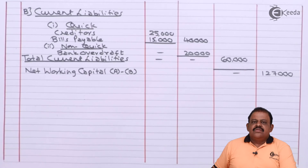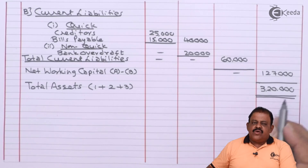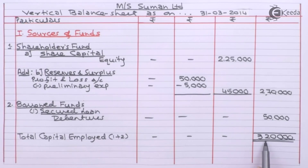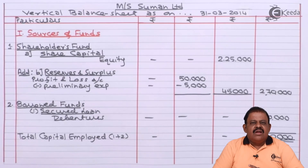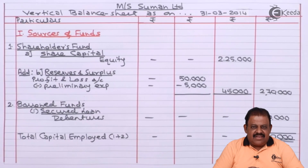From total current assets we deduct total current liabilities of 60,000 to arrive at net working capital of 1,27,000. This is added to fixed assets and investments to arrive at total assets of 3,20,000. Sources of funds (total capital employed) is also 3,20,000, meaning our vertical balance sheet is tallied. In this question we learned how to prepare a vertical income statement and vertical balance sheet based on the given information and various adjustments. Thanks for watching — stay tuned with Ikeda and subscribe to our channel.